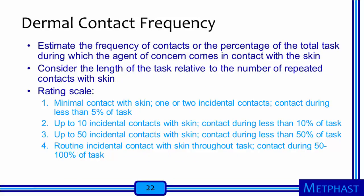For dermal contact frequency, we estimate the frequency of contacts or the percentage of the total task during which the agent comes in contact with the skin. With a rating scale of 1 to 4: a rating of 1 is for minimal contact — one or two incidental contacts, or less than 5% of the work task; a rating of 2 is for up to 10 incidental contacts or less than 10% of the task; a rating of 3 is for up to 50 incidental contacts or less than 50% of the task; and a rating of 4 is for routine contact throughout the task or 50% to 100% of the task.